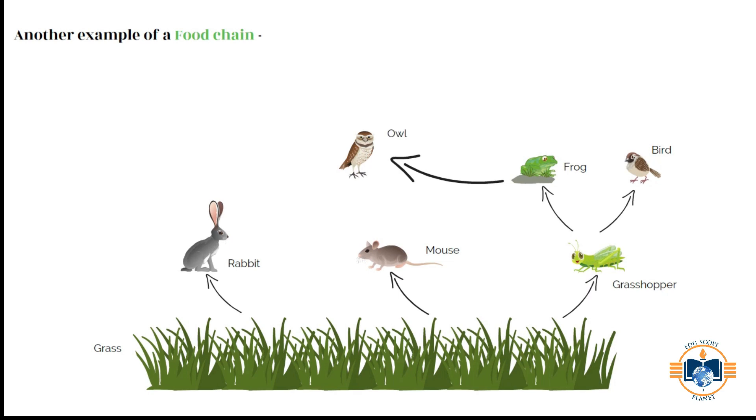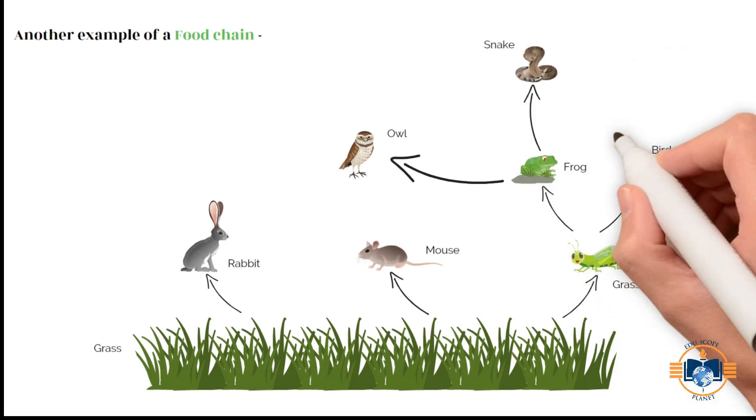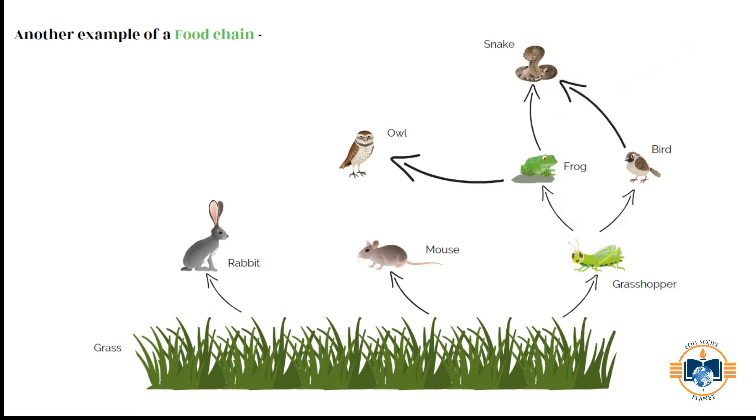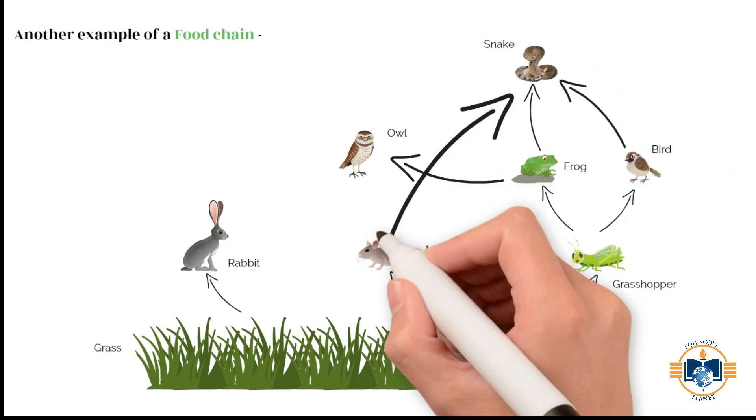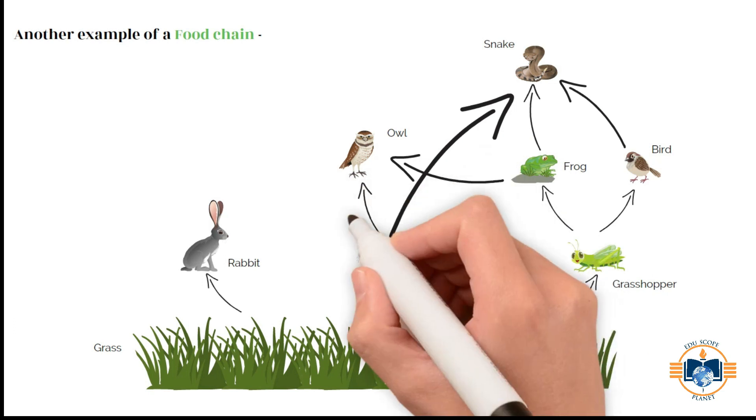Frog is eaten by owl. Frog is eaten by snake. Bird is eaten by snake. Mouse is eaten by snake, and mouse is eaten by owl.